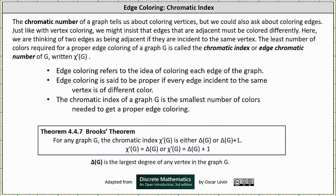Just like with vertex coloring, we might insist that edges that are adjacent be colored differently. Here we are thinking of two edges as being adjacent if they are incident to the same vertex. The least number of colors required for a proper edge coloring of a graph G is called the chromatic index or edge chromatic number of G, written χ'(G).